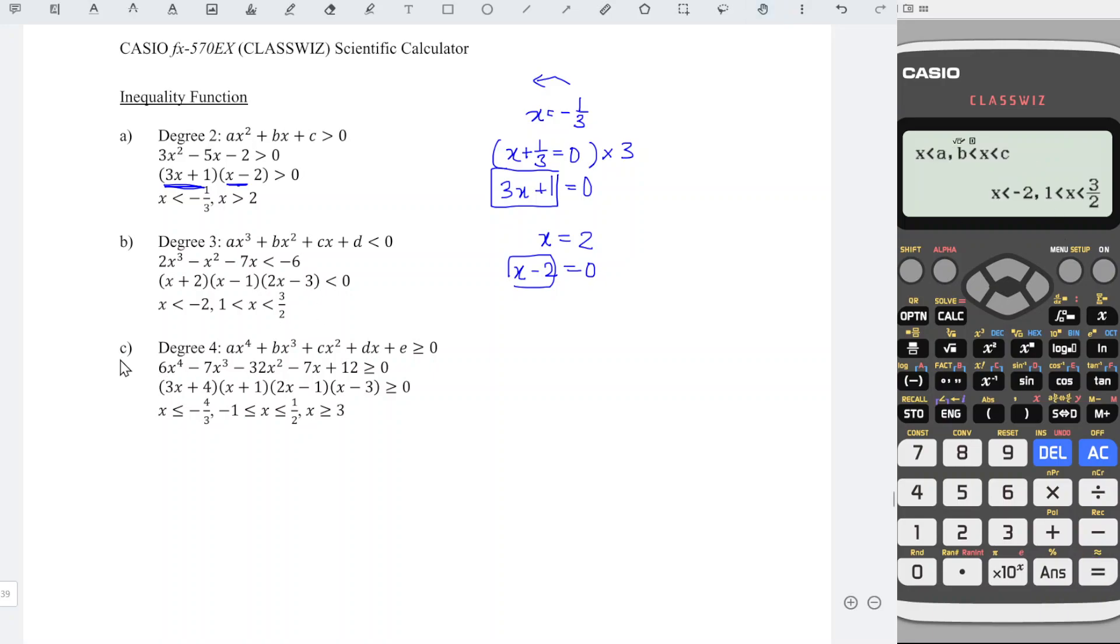For part C, also the same. Menu, inequality, degree 4. Choose the correct symbol, this is more than or equal to, which is number 3.